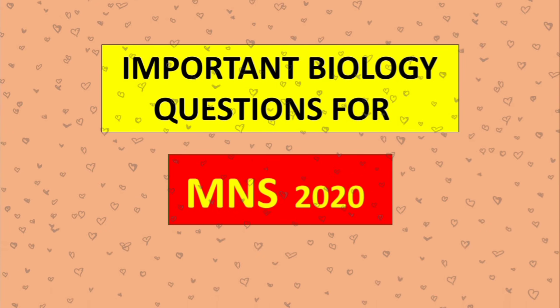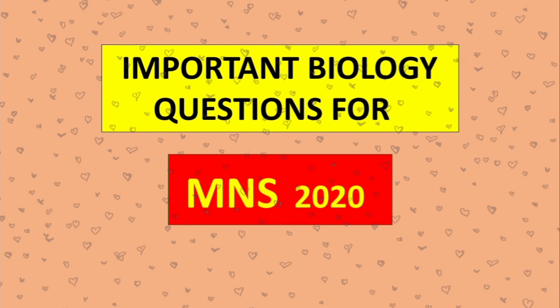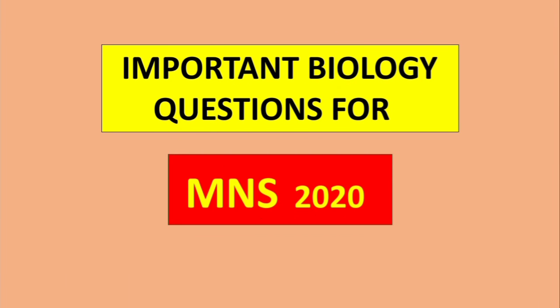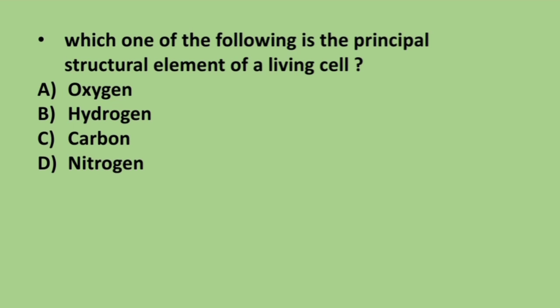Hello everyone, in this video we will be discussing some important biology questions for MNS 2020. The first question is: in a living cell, what is the site of ribosome formation? Options are Golgi bodies, endoplasmic reticulum, plasma membrane, and nucleolus. The correct answer is option D, nucleolus.